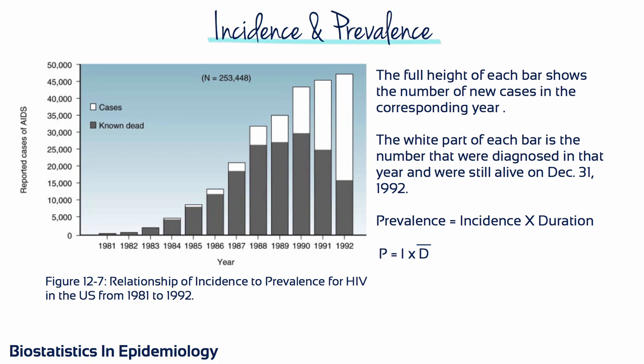The prevalence of AIDS increased dramatically from 1981 to 1990, mostly due to new incidents. After 1990, the prevalence, while much higher than in 1981, levels off — the sharp rise is not continuing. That is not because the number of new cases levels off; they continue to rise sharply. However, the number of people dying from AIDS begins to decrease, and therefore the prevalence levels off.